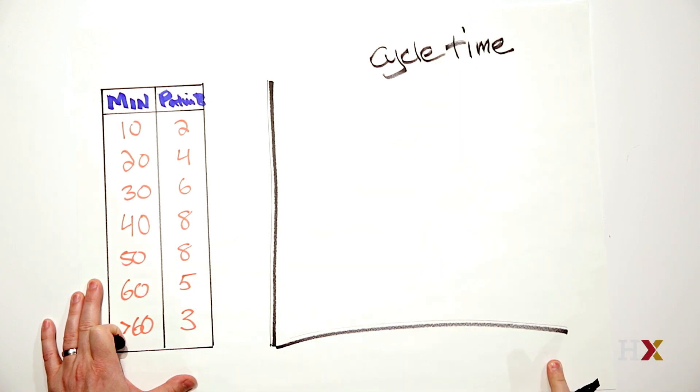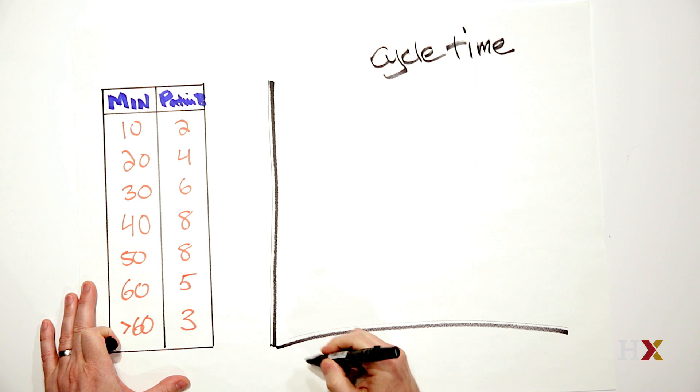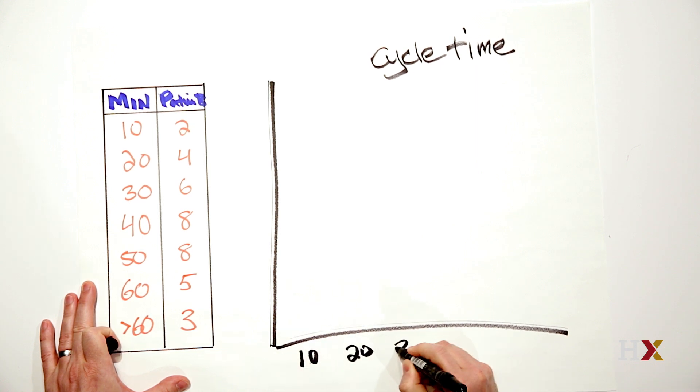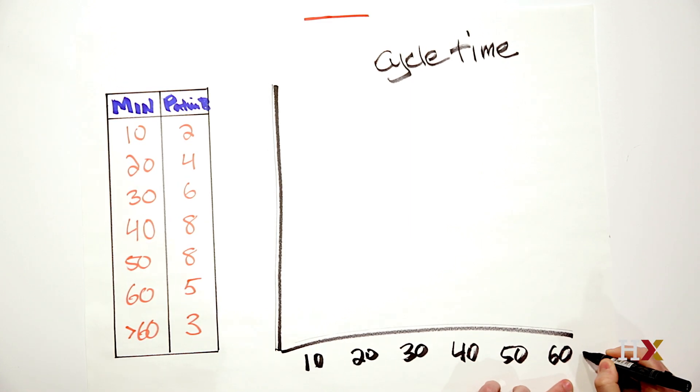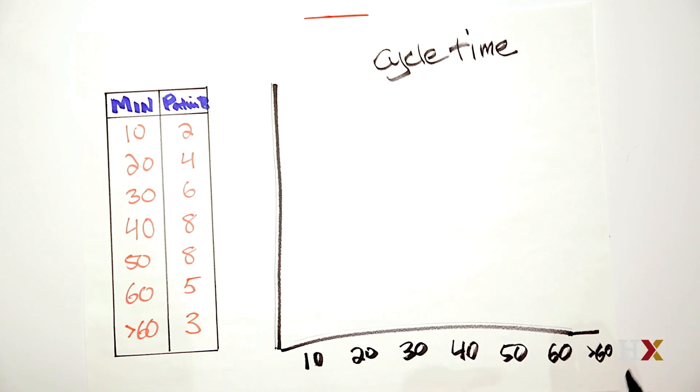Along the x-axis, we're going to put in our times here. So we've got 10, 20, 30, 40, 50, 60, and then I just lumped anything that's over 60 because for the most part we don't want that.